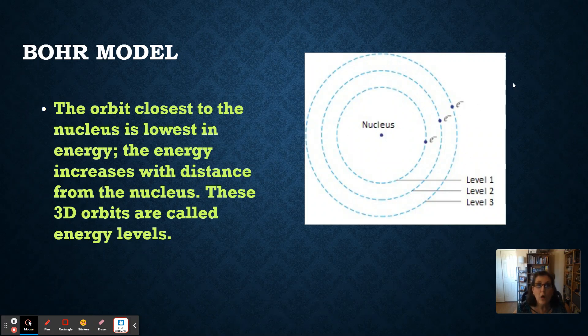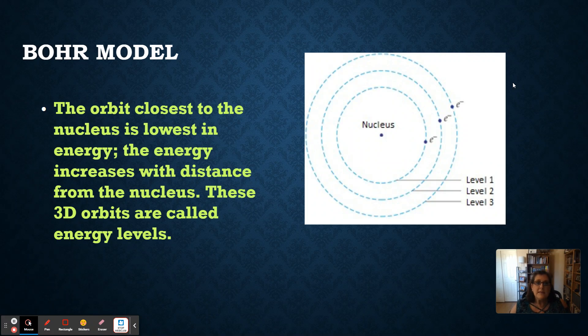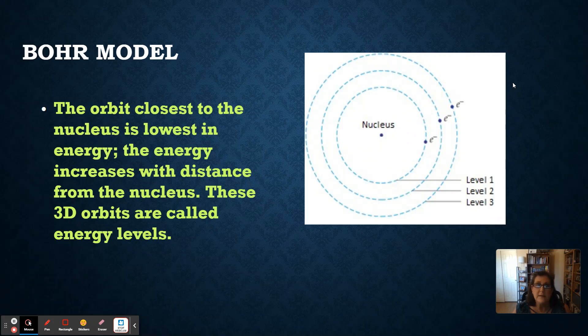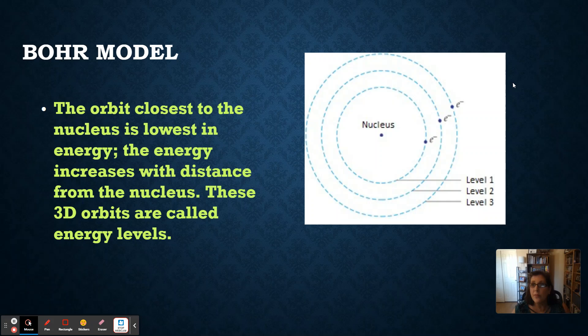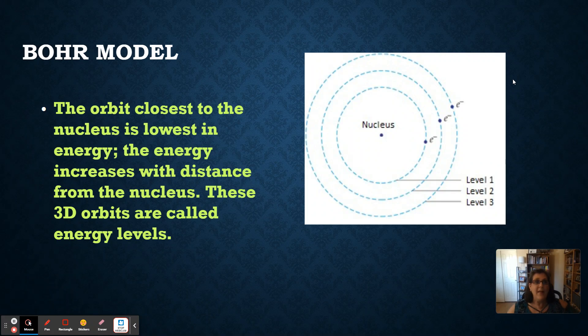Now, the orbit closest to the nucleus is lowest in energy. So, that would be level one. The energy increases with distance from the nucleus. So, energy level two is more energetic than one. And energy level three is more energetic than level two. These 3D orbits, again, are called energy levels. That's what we'll call them. And that's my introduction to the Bohr's model.